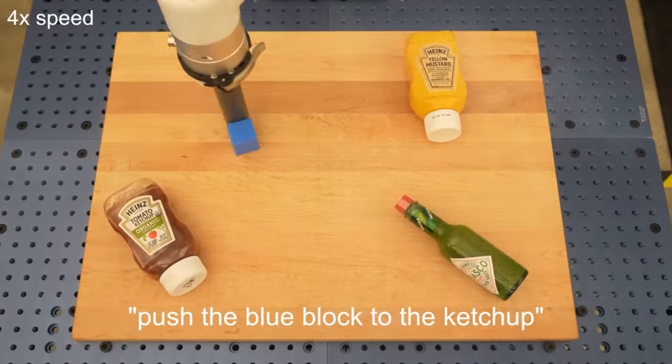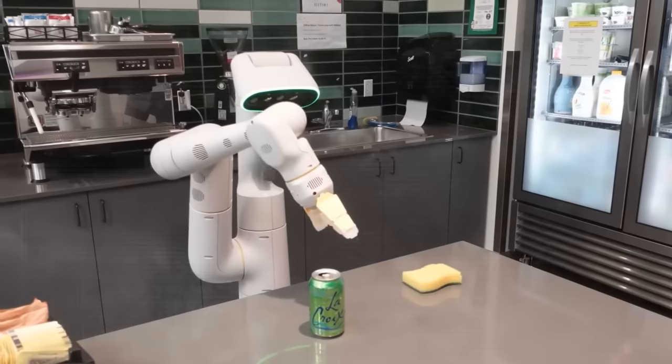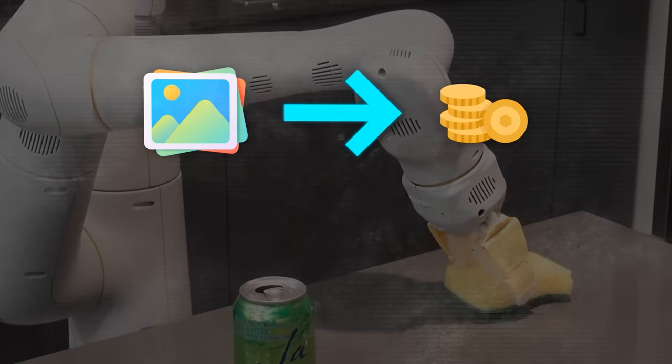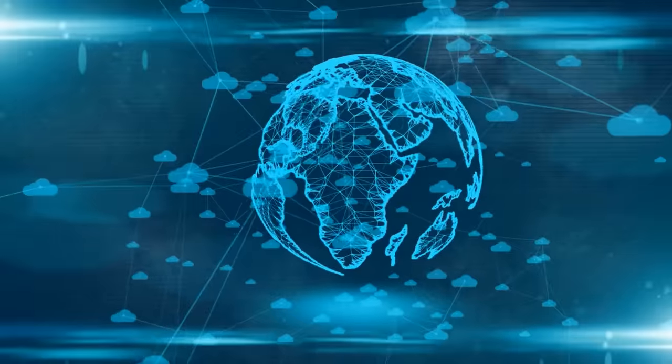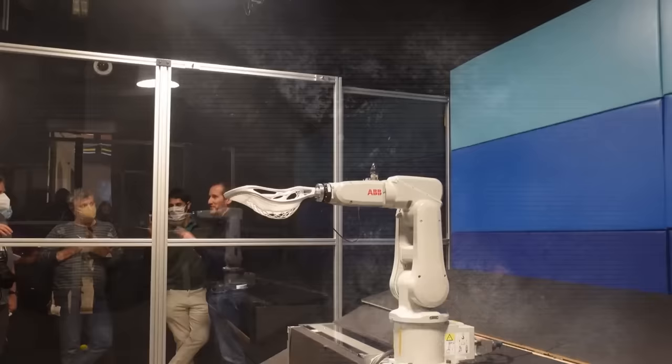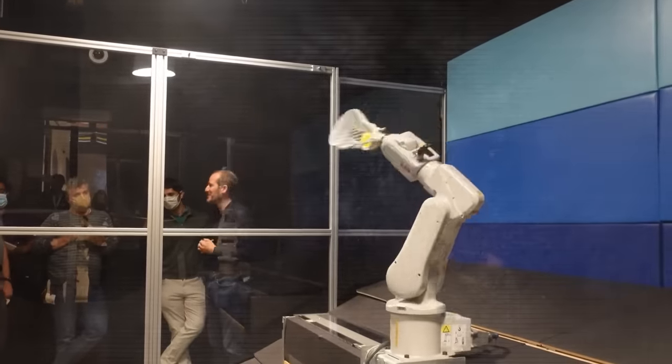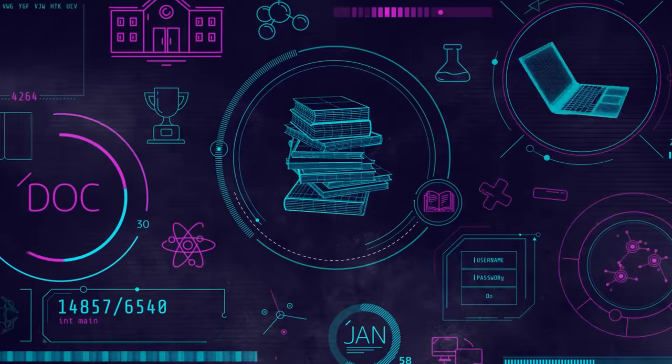This model works on a foundation like Palm E or Pali-X. These are models that turn images into tokens, like bits of information, and then change those tokens into words. They're trained with a lot of online data from many places. For robot tasks, RT2 changes these models to make action outputs instead of just words. Think of these actions as special instructions for the robot.